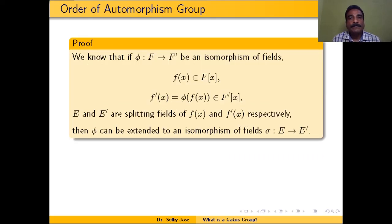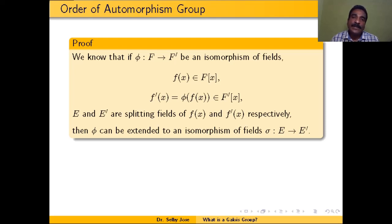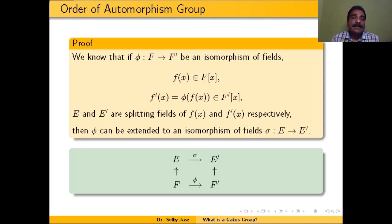In the proof of uniqueness of splitting fields, we showed that if φ is a field isomorphism from F to F', and f(x) is a polynomial in F[x] with f'(x) its image under φ, E is the splitting field of f(x), and E' is the splitting field of f'(x), then φ can be extended to an isomorphism σ from E to E'. That is, σ restricted to F equals φ, so σ is an extension of φ.